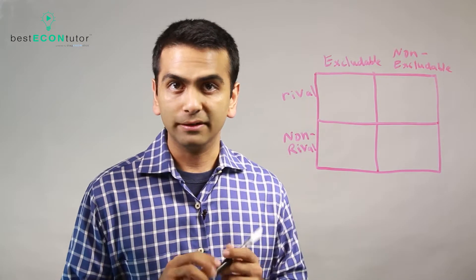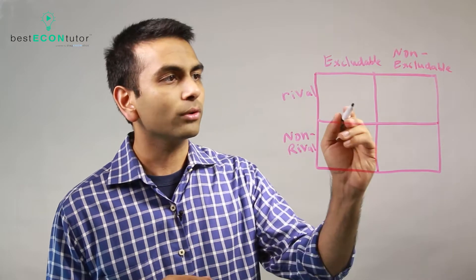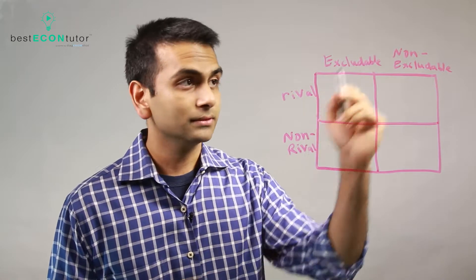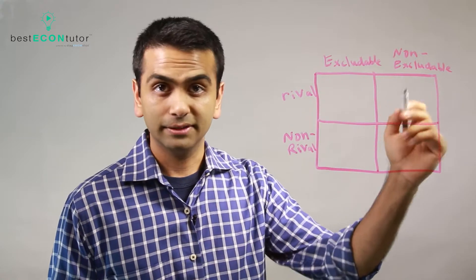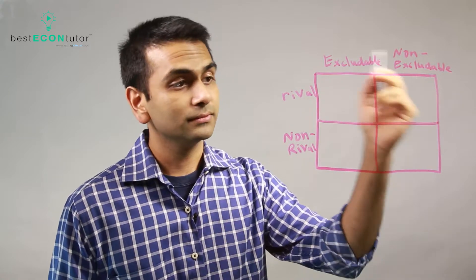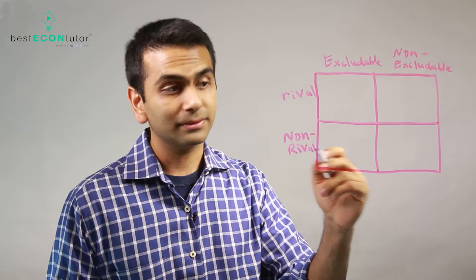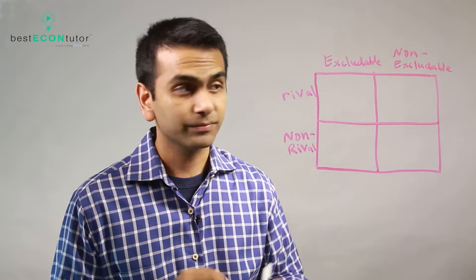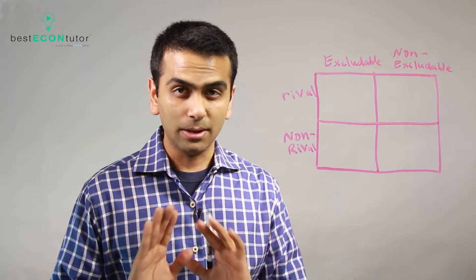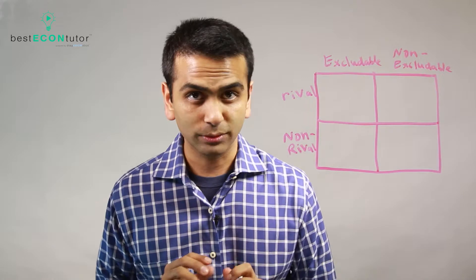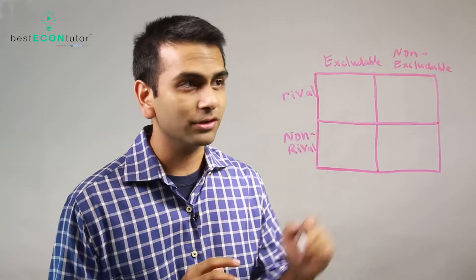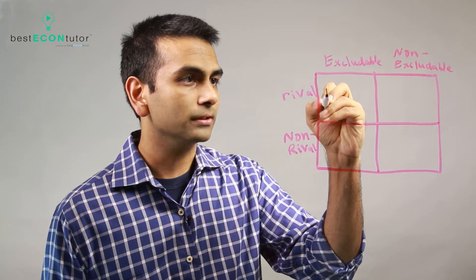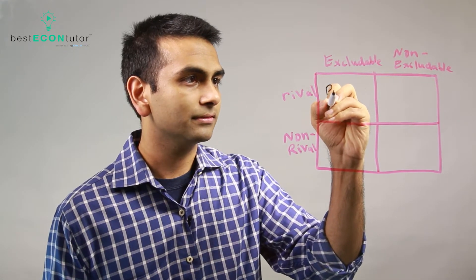Any good in the world can fall into one of four categories: rival and excludable, rival and non-excludable, non-rival and excludable, or non-rival and non-excludable. Up until now in this whole course, we've only talked about goods that fall into the rival and excludable category, and those are called private goods.